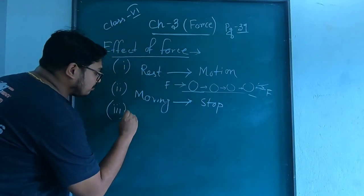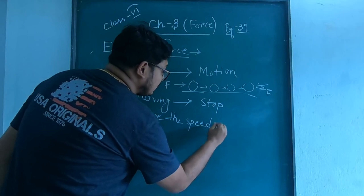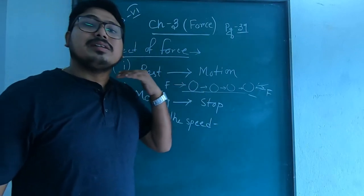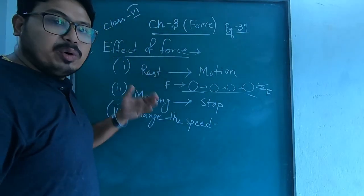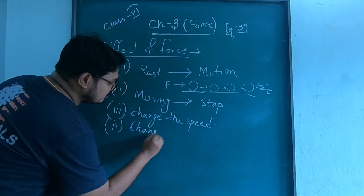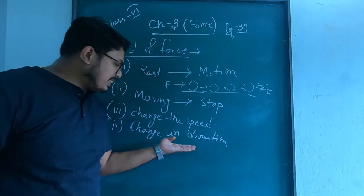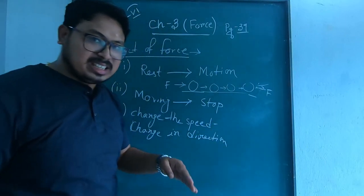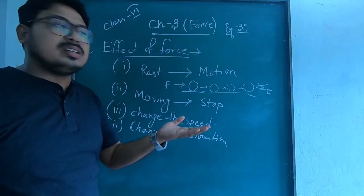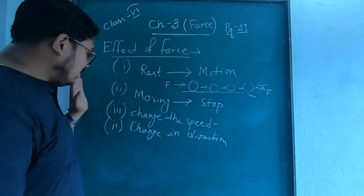Another effect: we can change the speed of a body. For example, in cricket or football, if a ball is moving and you kick or hit it, it starts moving at greater speed. So by using force we can increase or decrease the speed. Next, by applying force we can also change the direction of an object. In cricket, when a bowler bowls in one direction and the batsman hits the ball, it goes in another direction.